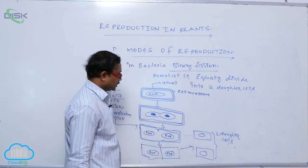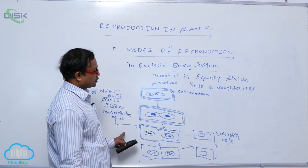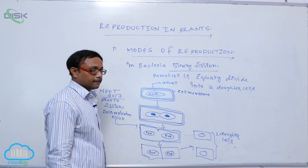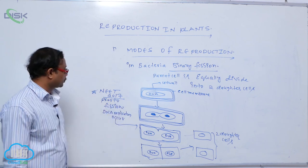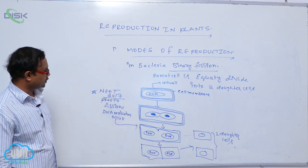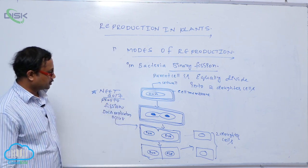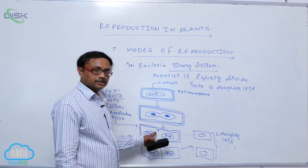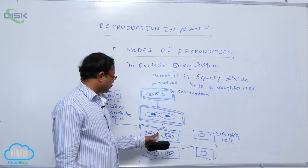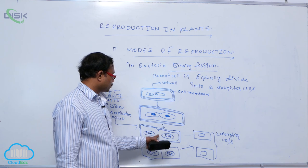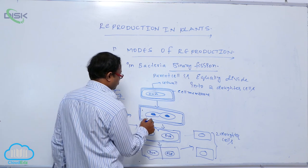That is Binary Fission taking place in bacteria. Prior to Fission, DNA replication occurs. After that, cell membrane is invaginated, followed by division of the cytoplasm.